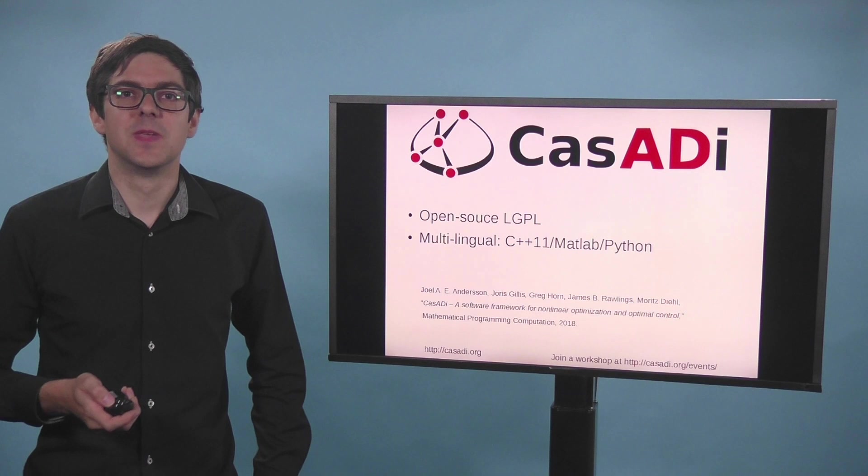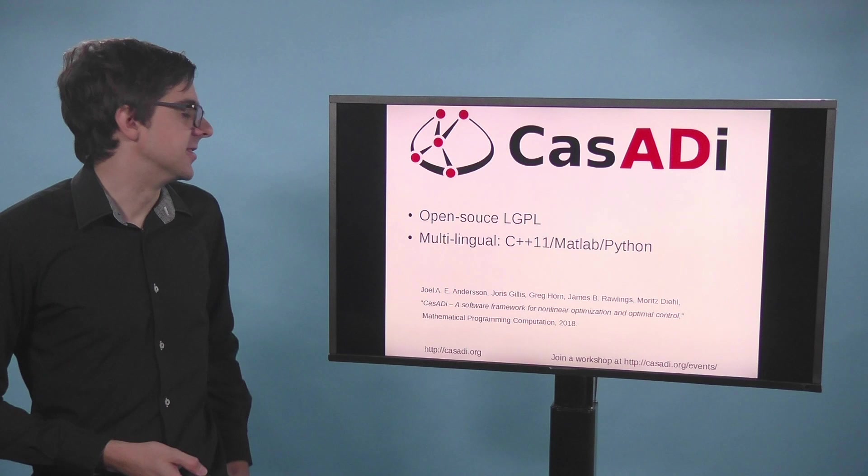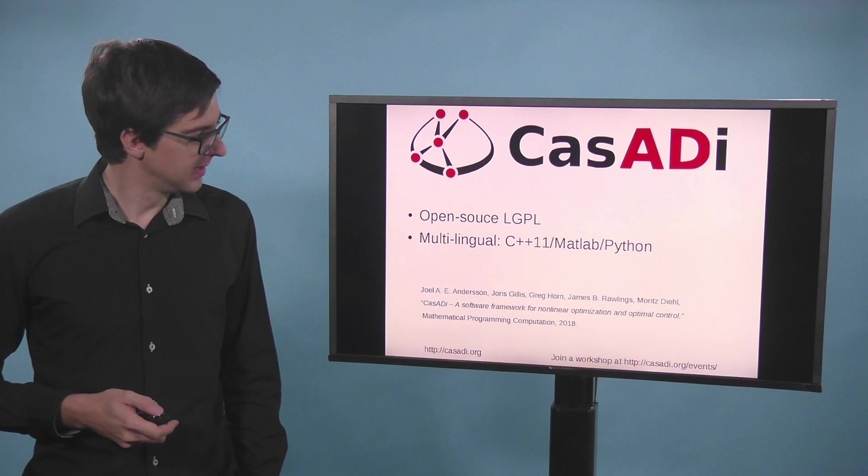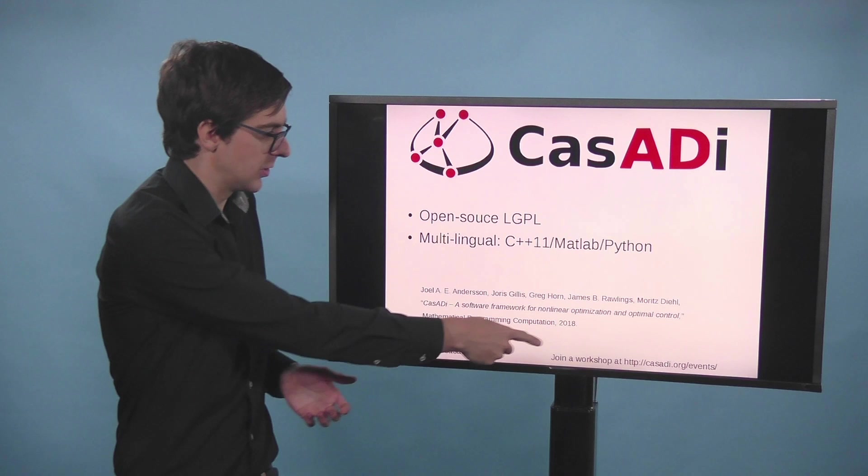So in summary, with CASADI you can easily do nonlinear optimization and optimal control. The source code is on GitHub. It has an LGPL license. You can use it commercially if you want. It's multilingual. You can use it in C++, in MATLAB or in Python. If you want to know more, visit our website. Or you can also subscribe for a workshop that is upcoming. Thank you for your attention.